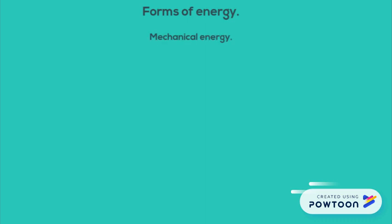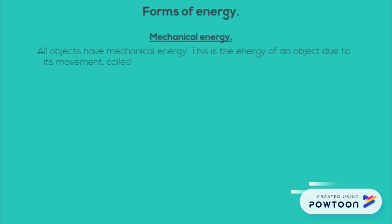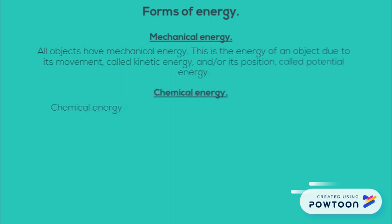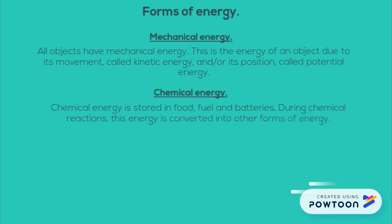Forms of energy. Mechanical energy: all objects have mechanical energy. This is the energy of an object due to its movement, called kinetic energy, or its position, called potential energy. Chemical energy is stored in food, fuel, and batteries. During a chemical reaction, this energy is converted into other forms of energy.